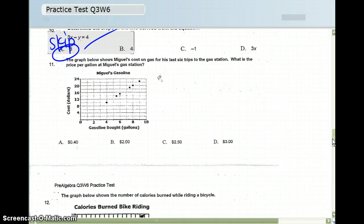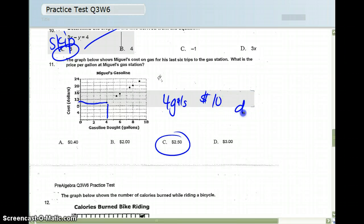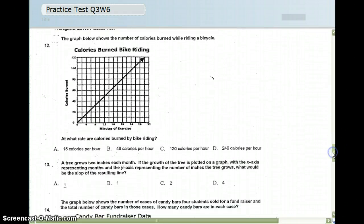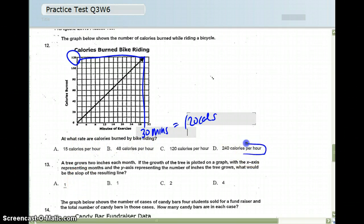Number 11, the answer is C, because if I line up 4 gallons, and if I look at this dot over here, the 4 gallons is going to cost me $10, and then I can go ahead and just divide those two numbers to get 250. 10 divided by 4. And then number 12, I'm able to look at 30 here and here and get 120. So 30 minutes is 120 calories. And if I double that, that'll give me the just per hour rate. So my answer is D.